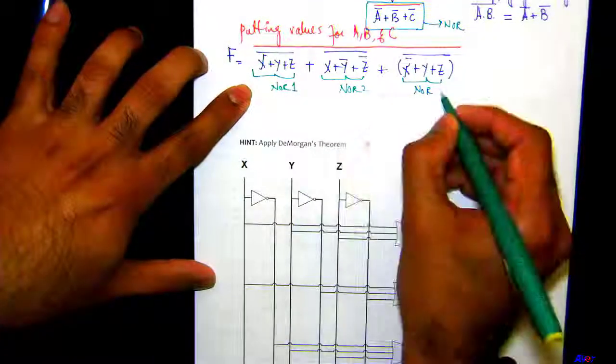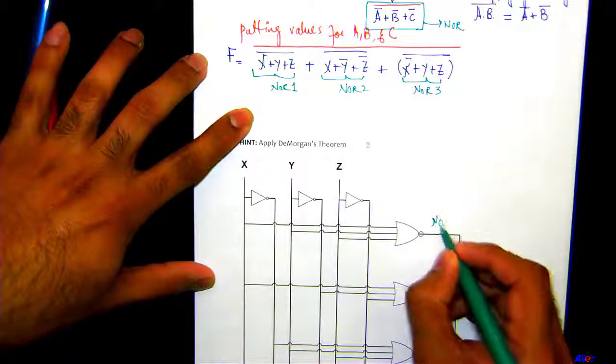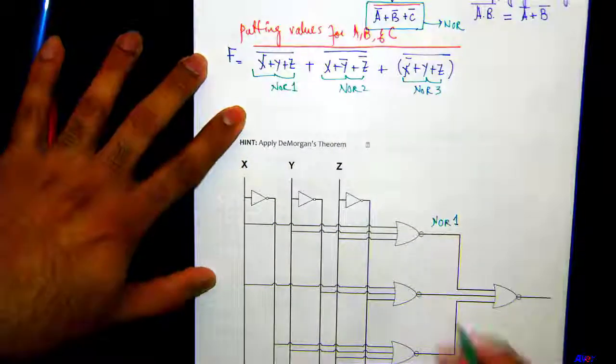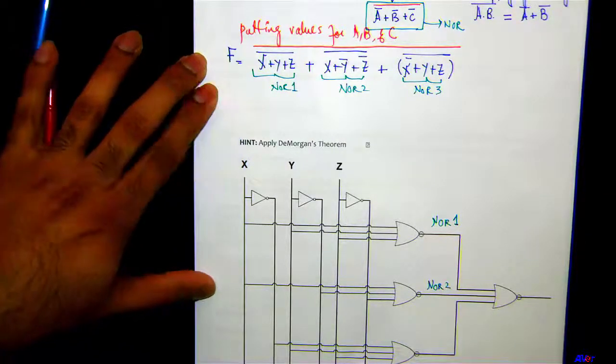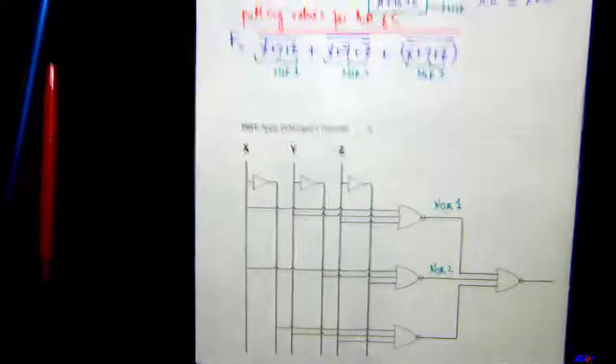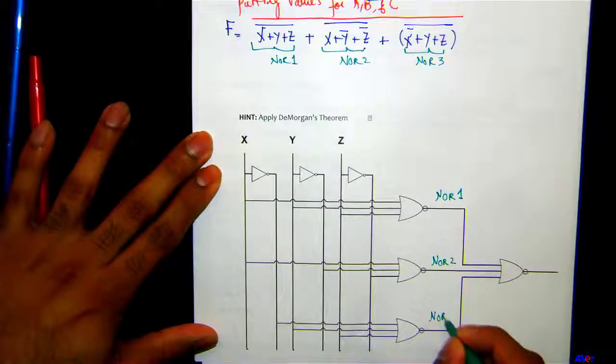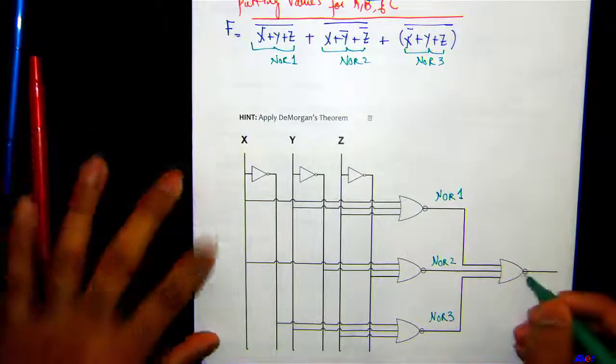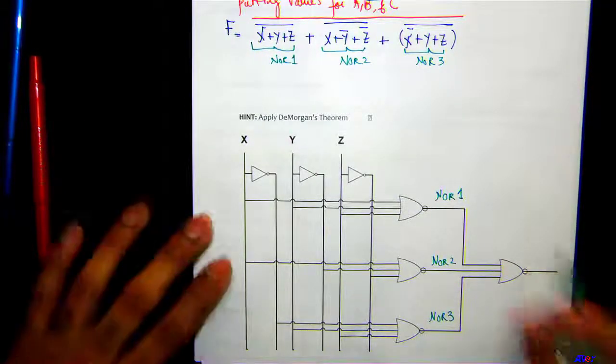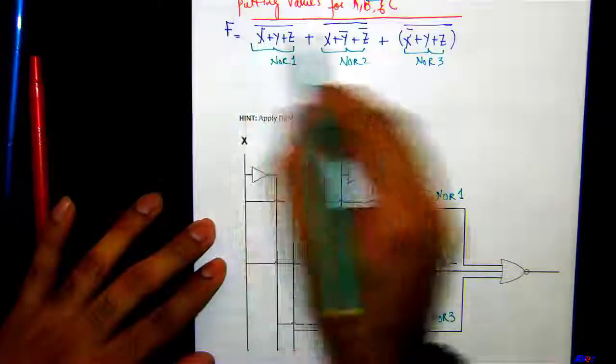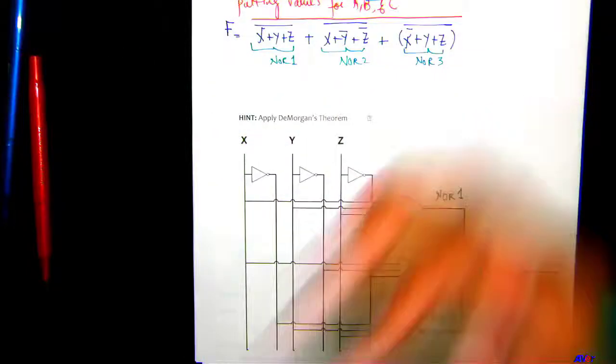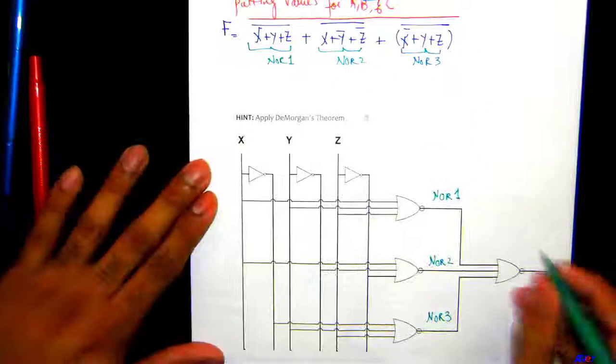NOR 2, and NOR 3. So this is your NOR 1 right here, this is your NOR 2 right here, and this is your NOR 3 right here. And why do I have this NOR right here? Because these individuals, they also make another NOR gate because I got the bar on the whole thing. So this will be your F right here.